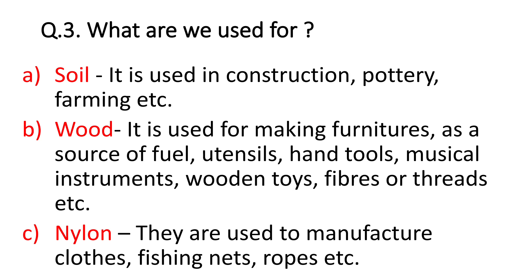Question number 3: what are these materials used for? First is soil — it is used in construction, pottery and farming. Construction, pottery means making various mud artifacts and decorative items, and in farming, soil is most important because all crops yield in soil only. Second is wood — it is used for making furniture, as a source of fuel, for utensils, hand tools, musical instruments, wooden toys, and fibers and threads are also made from wood.